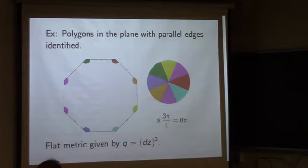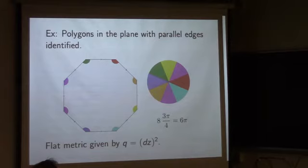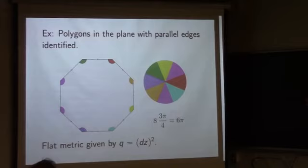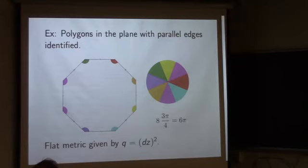It turns out to have a zero at the singularity, although it takes some effort to think through what happens there. You can get all Riemann surfaces in this way, and you can get each Riemann surface in many different ways. You can cut this polygon and re-glue it, and you obviously still get the same quadratic differential on the same Riemann surface. Also, there are many quadratic differentials on each Riemann surface — a whole vector space of them. A polygonal presentation of a Riemann surface is equivalent to a choice of non-zero quadratic differential.